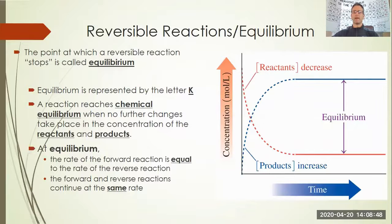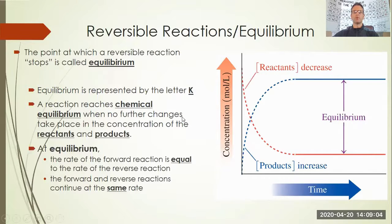Reversible reactions do stop — not really stop, but what we call that is equilibrium. The point at which a reversible reaction quote-unquote stops is called equilibrium, and we represent equilibrium by the letter K. When you see the letter K, you should think of chemical equilibrium. A reaction reaches chemical equilibrium when no further changes take place in the concentration of the reactants and the products.